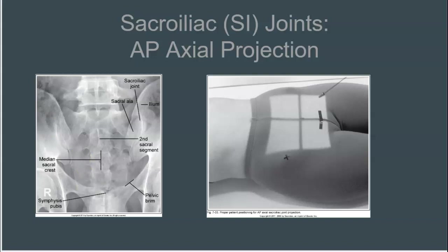This image demonstrates an AP axial SI joint projection with accurate positioning. You can see that the median sacral crest is in line with the pubic symphysis, so we know that there is no rotation here.